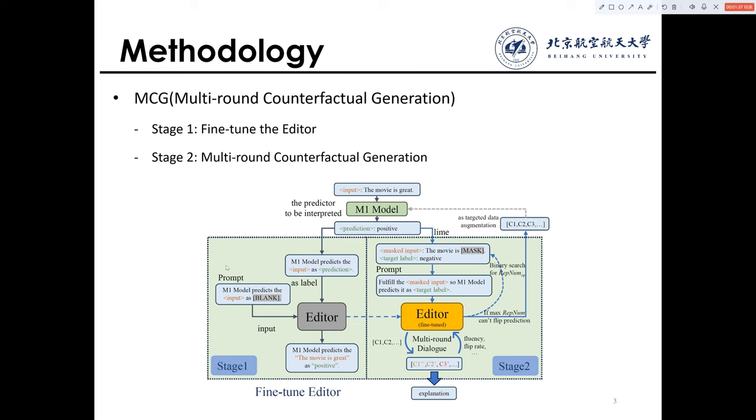Then MCT begins to generate counterfactual text. First, we attribute the text using LIME. Then we input the masked sentence and the target label to construct a prompt to generate cases.